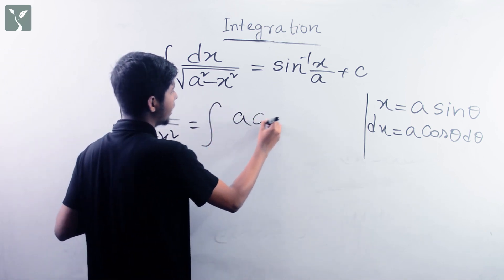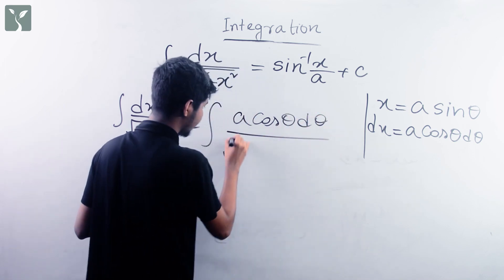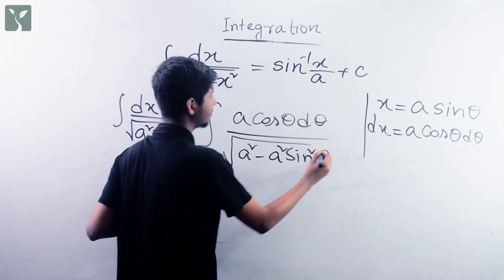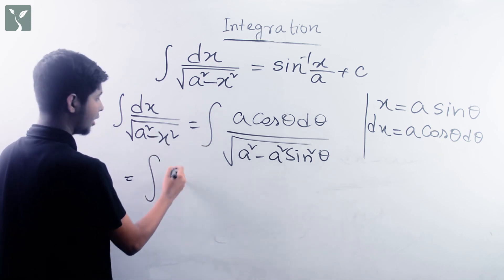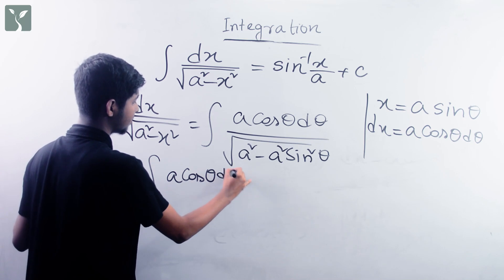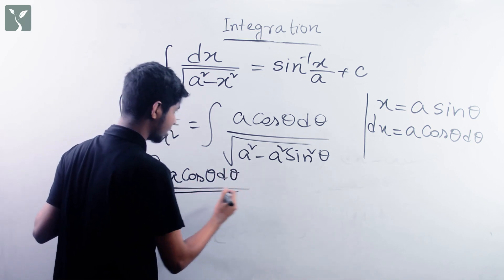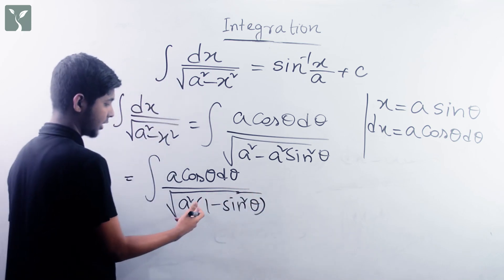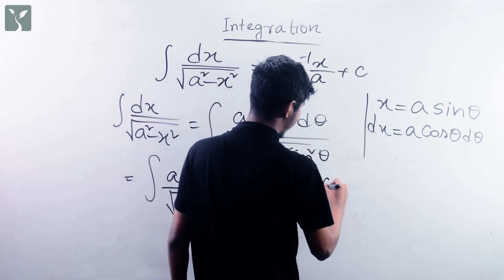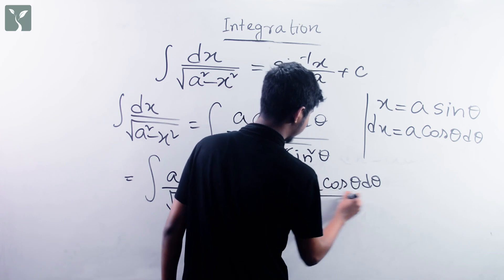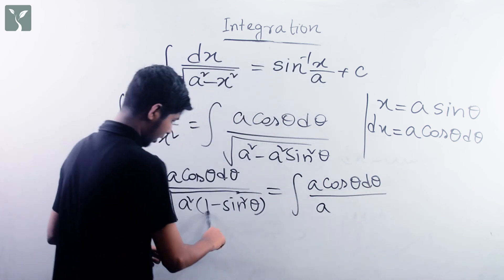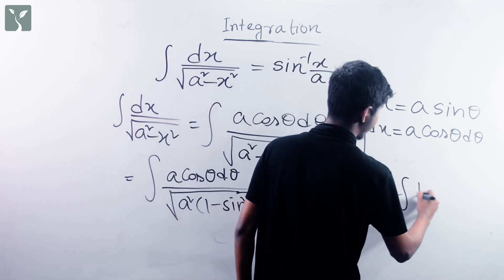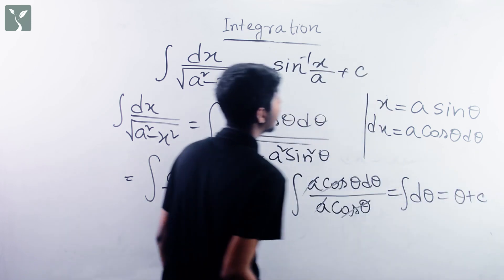We substitute x = a sin theta, so dx = a cos theta d theta. Then the integral becomes a cos theta d theta divided by root over a squared times one minus sin squared theta, which simplifies since root of one minus sin squared theta is cos theta.